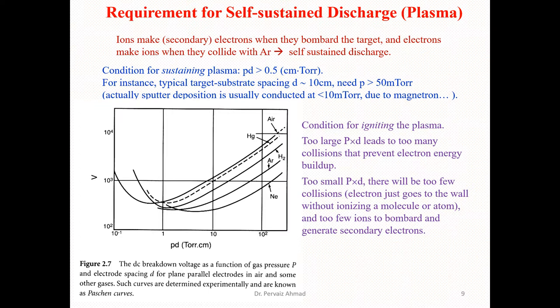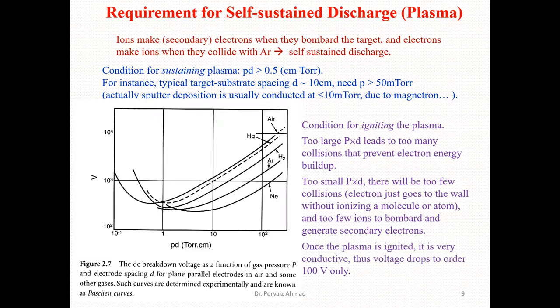If p×d is too large, it may lead to too many collisions that prevent electron energy buildup. If p×d is too small, there will be too few collisions, so electrons just go to the walls without ionizing molecules or atoms, and too few ions bombard and generate secondary electrons. Once the plasma is ignited, it is very conductive, thus the voltage drop is on the order of 100 volts only. That's all for this lecture — thanks for watching, see you next lecture, bye bye.